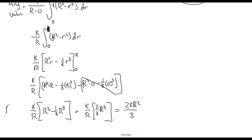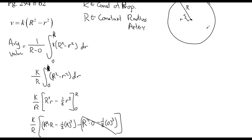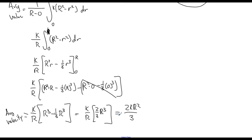So my average velocity is 2KR²/3. The average velocity is dependent on whatever the constant of proportionality K is and the radius R of the artery. Any particular cell of blood going through the artery will have an average velocity described by this expression, provided you know K and R.